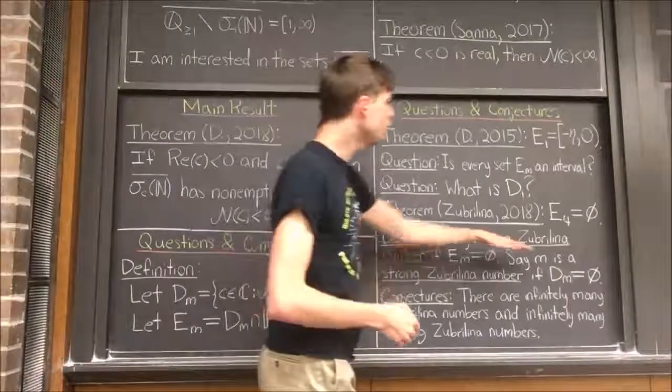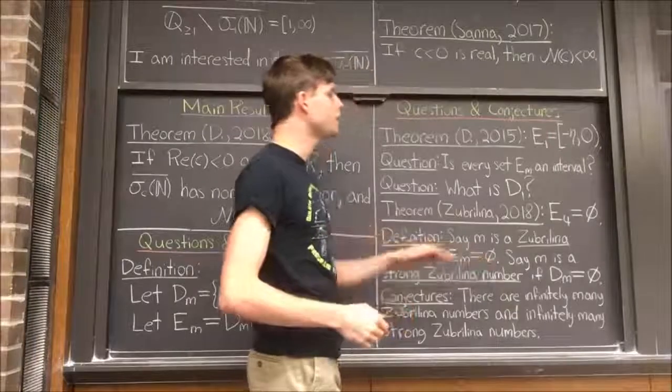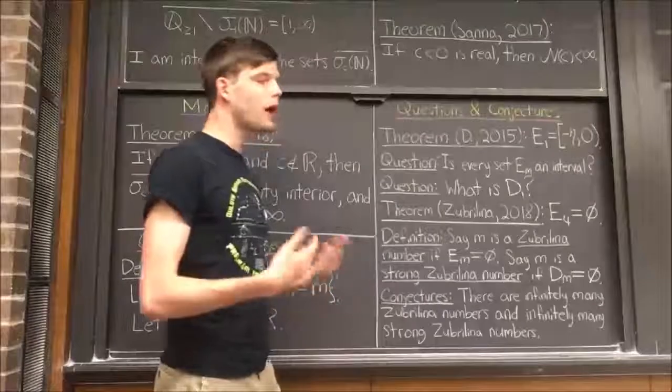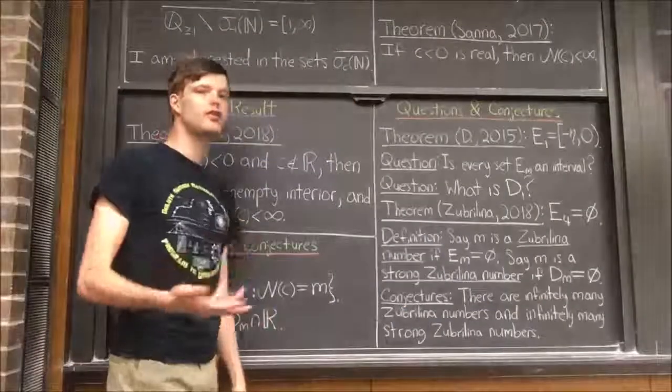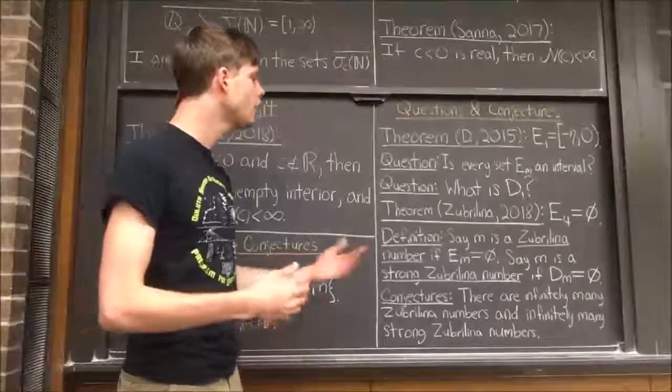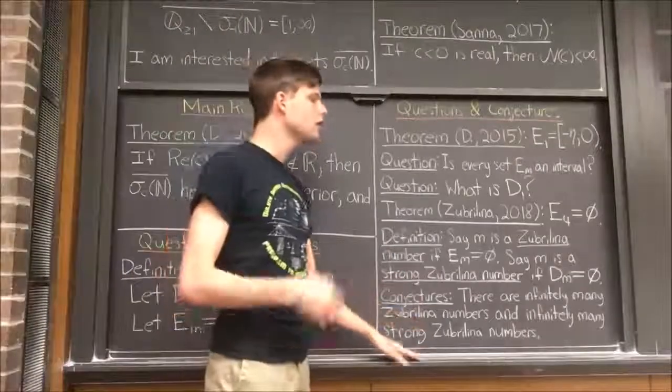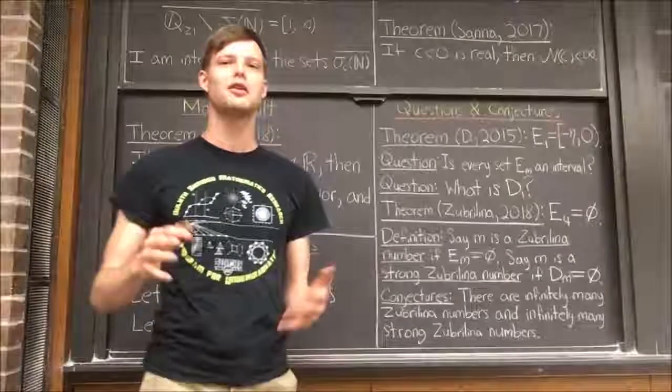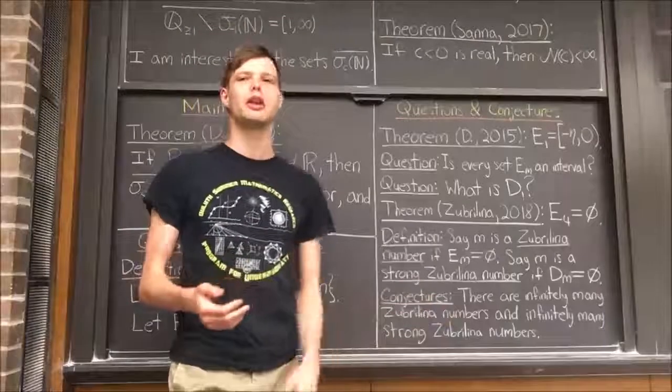For this reason, I've defined a Zubrilina number to be a positive integer m such that the set E_m is empty. Similarly, we can define a strong Zubrilina number to be a positive integer m such that D_m is empty. The two conjectures I have are first that there are infinitely many Zubrilina numbers, and second, that there are infinitely many strong Zubrilina numbers. This second conjecture might be a bit radical because we don't yet have any explicit examples of strong Zubrilina numbers.